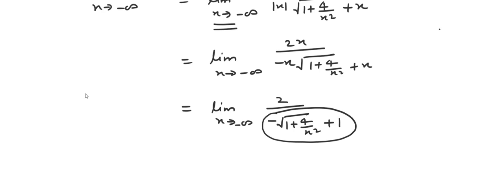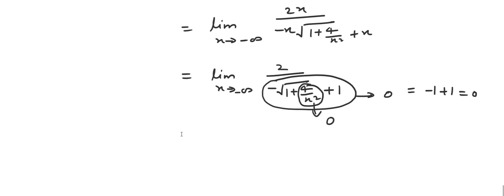Now observe the denominator. As x goes to minus infinity, the term 4 over x squared goes to 0. So the denominator expression becomes minus 1 plus 1, which equals 0. As x goes to minus infinity, the denominator expression goes to 0. That means in this case the limit does not exist. Thank you.